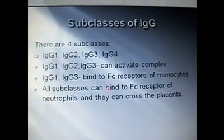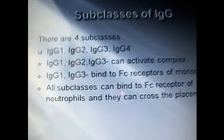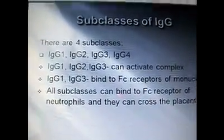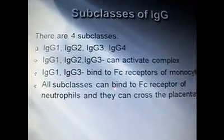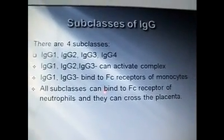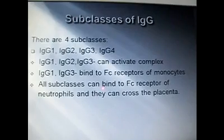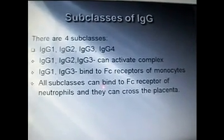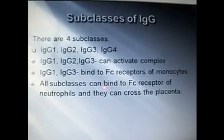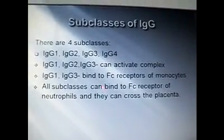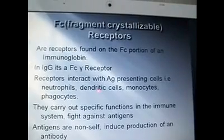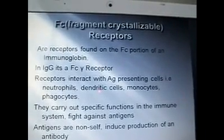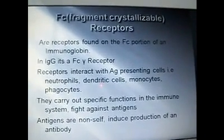There are four subclasses of IgG: IgG1, IgG2, IgG3, and IgG4. IgG1, IgG2, and IgG3 can activate complement. IgG1 and IgG3 bind to the Fc receptor of monocytes. All subclasses can bind to the Fc receptor of neutrophils, and they all can cross the placenta.